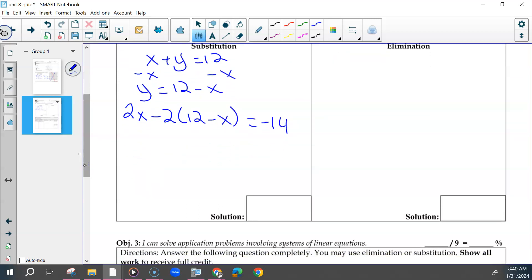And then this is where a lot of us went wrong. So at this point, some of us, when we distributed, made this minus 2x, which cancelled this out, but this should have been a plus. This should not have been no solution. You should have been able to combine the terms and solve to get an actual solution.